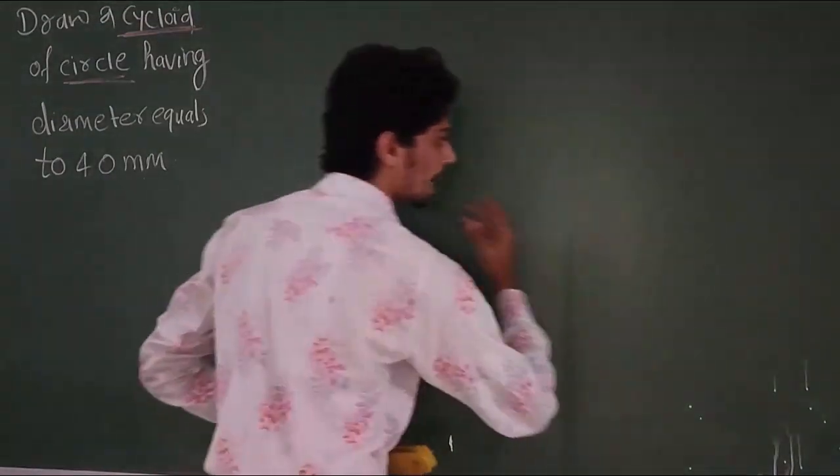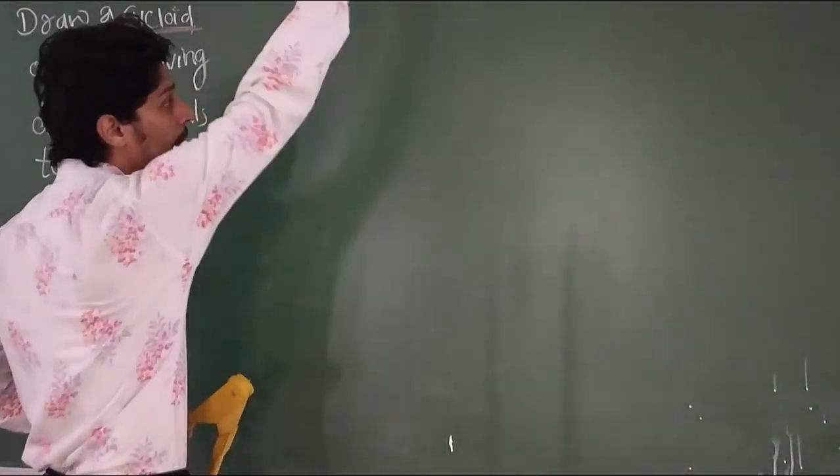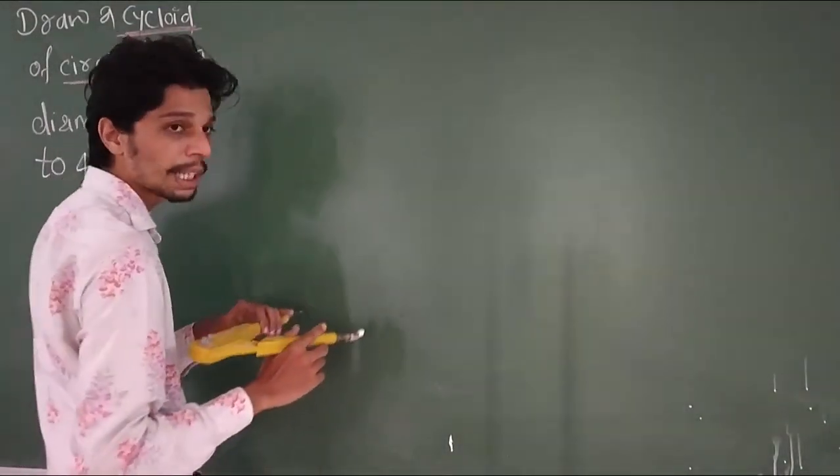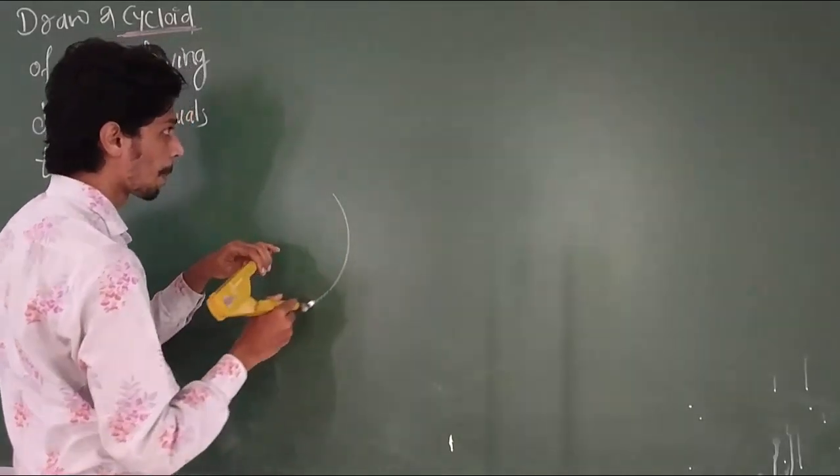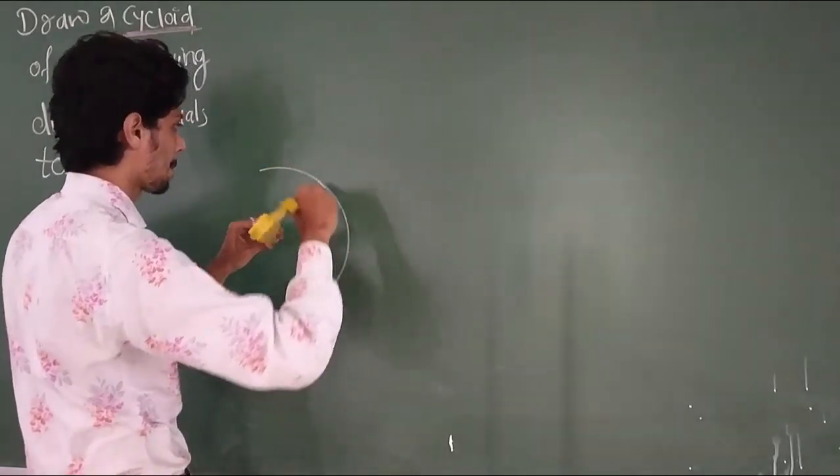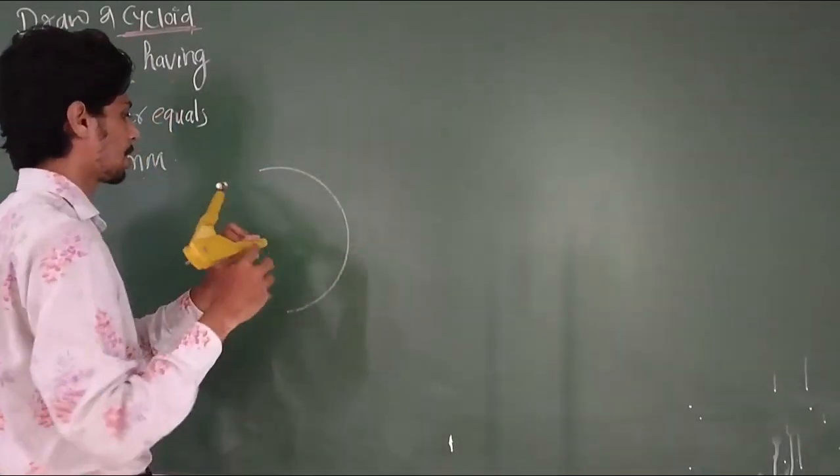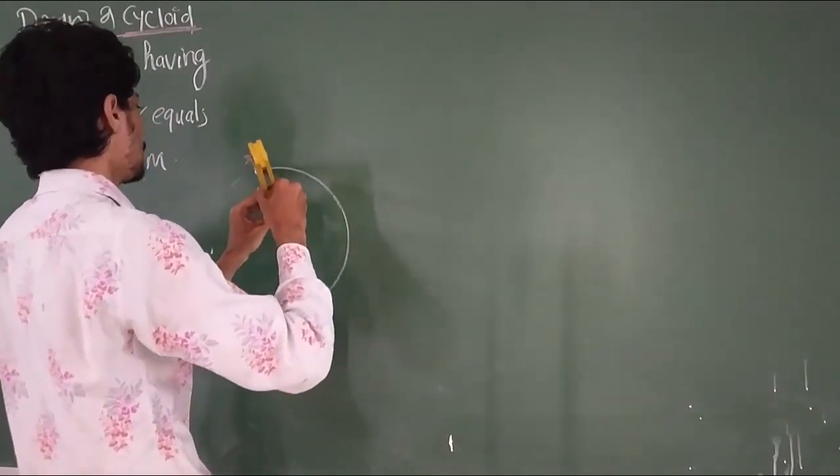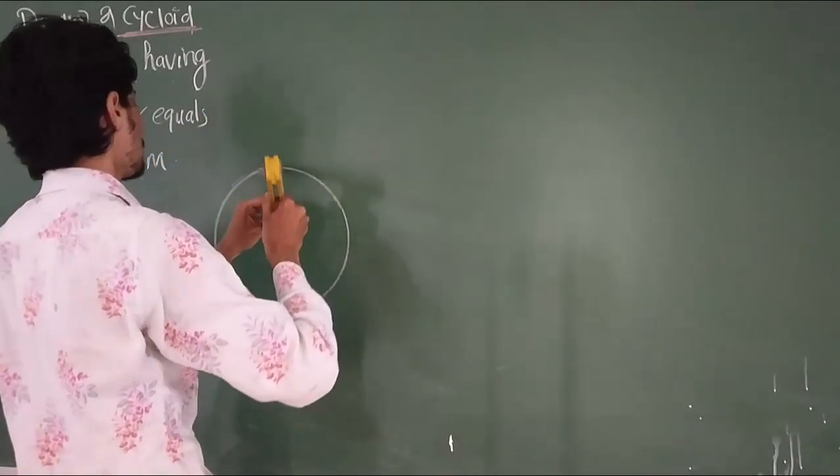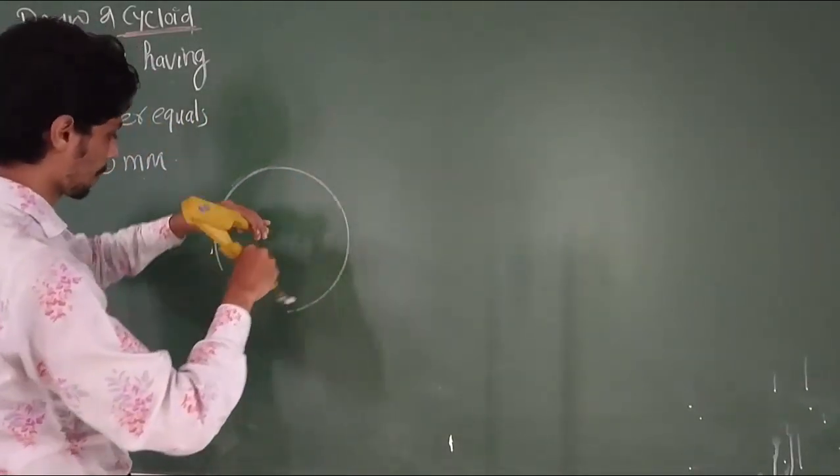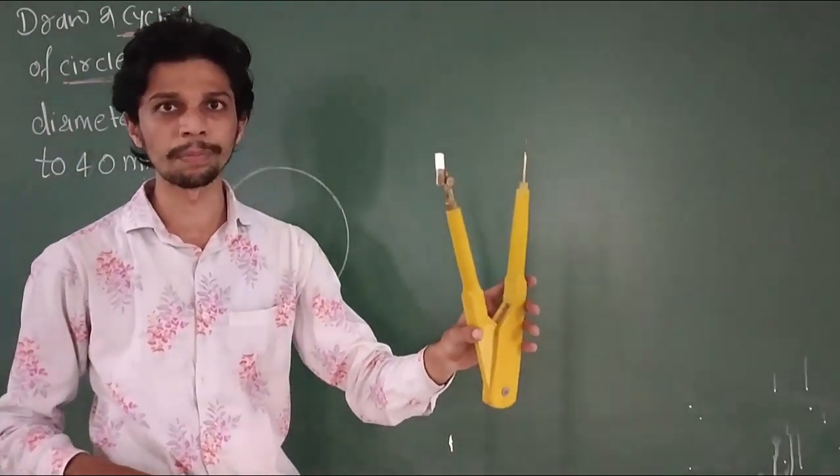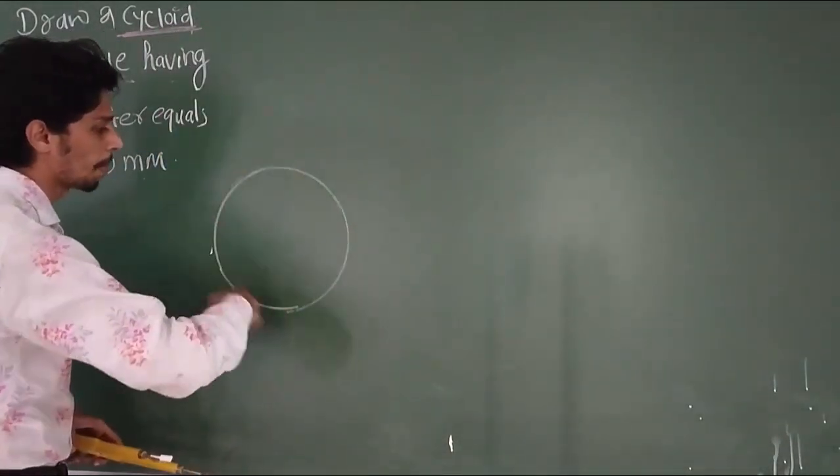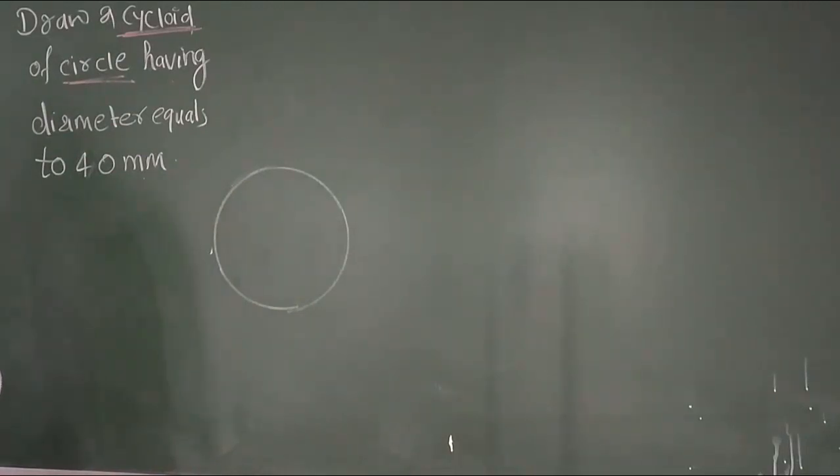You will know that the circumference of a circle will be longer. So, I am going to draw the circle. The diameter of the circle is 40 mm. 40 mm means its radius will be 20 mm. So the radius will be 20 mm.